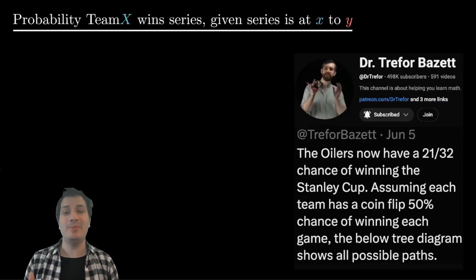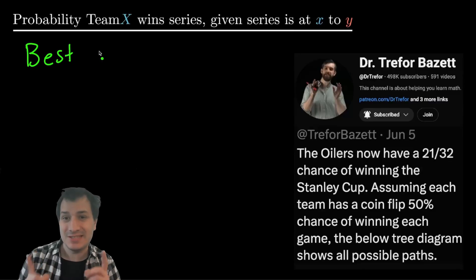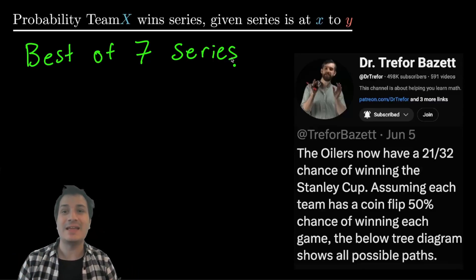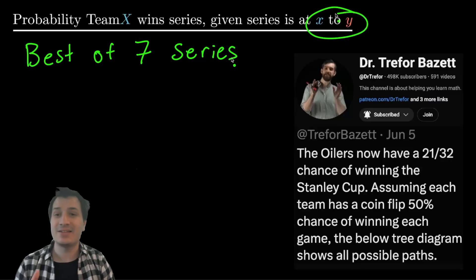In this video, we're going to answer a classic probability problem, which is if Team X plays Team Y in a best of seven series, then what is the probability that Team X will win the series given that the current series score is X to Y?